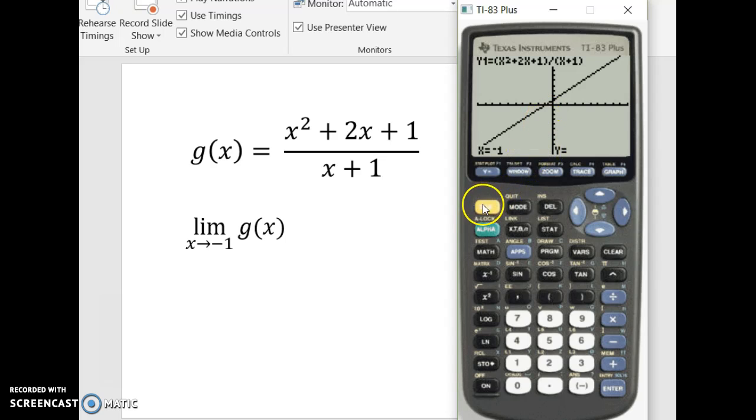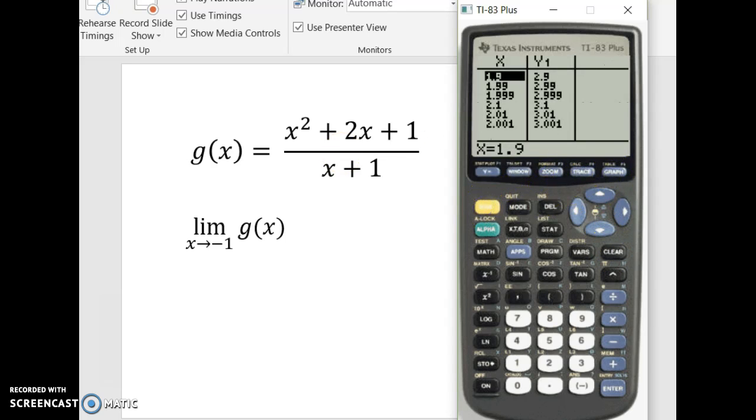So let's go ahead and go to the table. I'm going to delete all this stuff. Okay, so negative 1.9, negative 1.99, negative 1.999. It looks like we're getting close to negative 1, doesn't it?